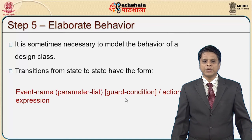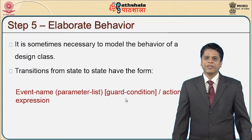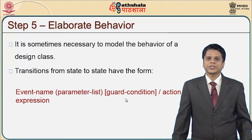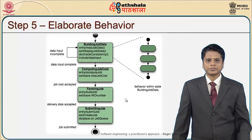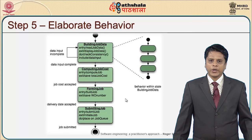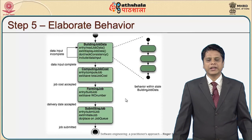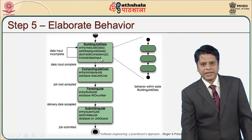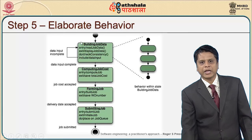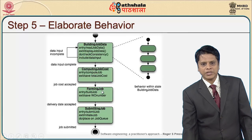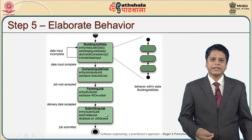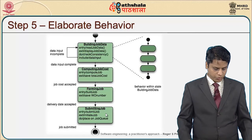The transition from one state to another has the form: event name, parameter list, guard condition, and action expression. To elaborate the behavior, it is given as a flow — build job data has a lot of attributes; if data input is incomplete, it can be redone; computing job cost, forming the job, and submitting the job are all elaborate behaviors each job has to perform.